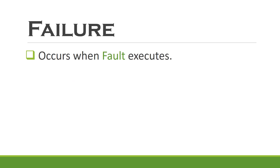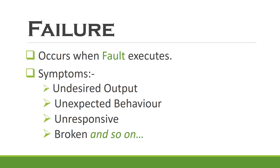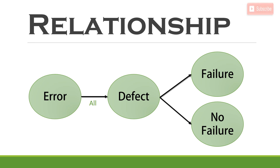A failure occurs when a fault executes. In simple terms, the software cannot perform its function, or even performs it in an undesirable way. There could be various symptoms like undesired output or unexpected behavior shown by the system under failure conditions. This could be a quick summary diagram which represents the relationship among error, defect, and failure. You can clearly observe that all errors result in defects, but not necessarily all defects will become failures — meaning a few defects can still be there in the system but cannot block its functionality, like the color of a UI.